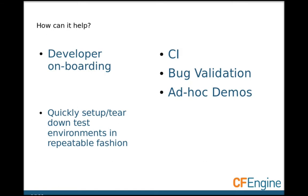I also use it for doing ad hoc demos — things where I want to show somebody something and I need a clean environment. It only takes a minute. For reproducing bugs in somebody else's environment, I don't have to have long-running instances with old versions of software. I can just quickly bring up a fresh instance with the old version. Instead of toting around hundreds of megabytes of virtual machines, I carry just the Vagrant file spec, which is only a few kilobytes, giving me lots of different environment possibilities that I can quickly spin up and spin down.